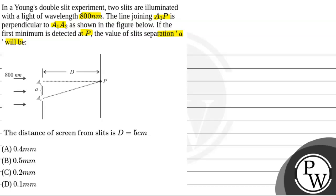Now given A1P is perpendicular to this. How do we find that slit separation A is what? When at P, we see first minimum. So here we see first minimum.